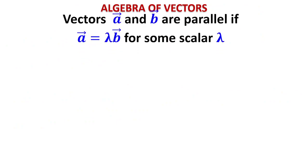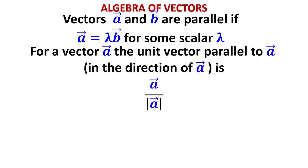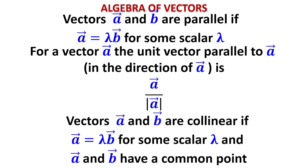Keeping these in mind, suppose you have two vectors a and b. If they are parallel, one vector will be written as a scalar multiple of the other. The unit vector parallel to a given vector is that vector divided by its magnitude. If a vector is a scalar multiple of another and both vectors have a common point, then they are said to be collinear. Vectors a and b are collinear if vector a = λ·vector b for some scalar λ, and they share a common point.